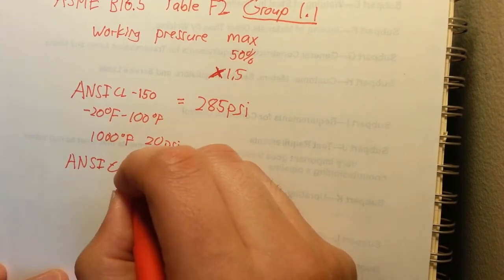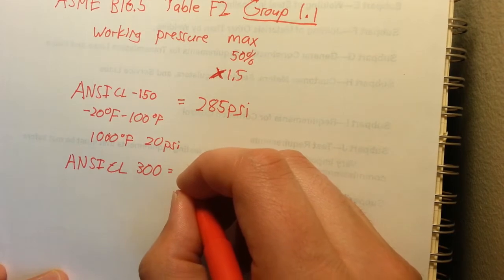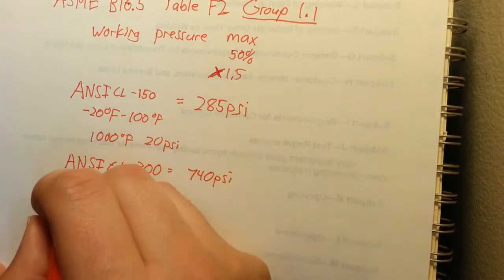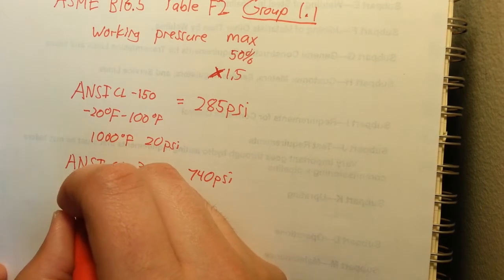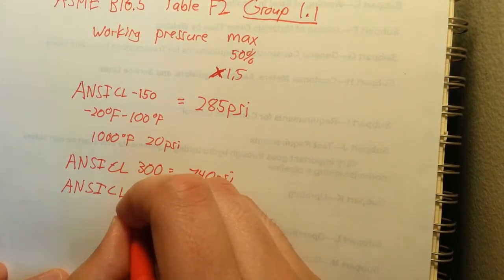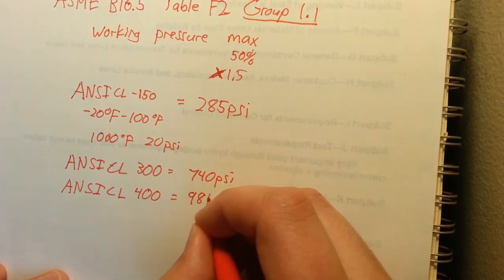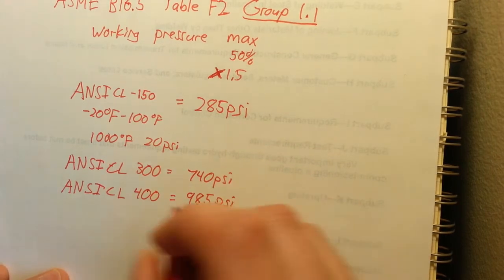So the next one is ANSI class 300. That working pressure is 740 PSI. The next one is ANSI class 400. That working pressure is 985 PSI.